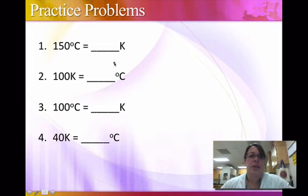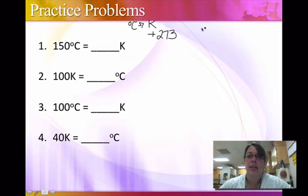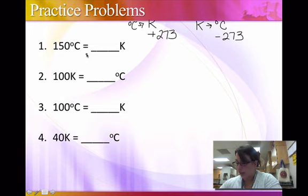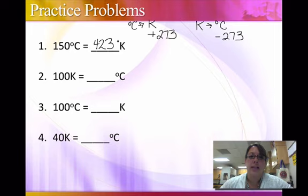Here's our practice with them. If I have 150 degrees Celsius, how we get to Kelvin is we add 273. So to go from degrees Celsius to Kelvin you add 273. To go from Kelvin back to degrees Celsius, you're going to subtract 273. So if I do that, 150 plus 273, we're going to get 423 Kelvin. And see, here again, this is not degrees Kelvin, it's just Kelvin.